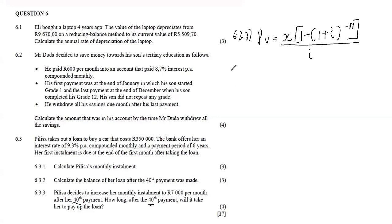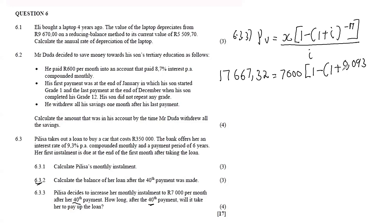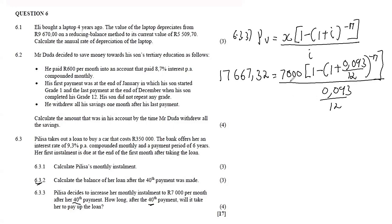The present value — the outstanding balance after the 48th payment — is R177 667.32, the value calculated in the previous question. The new installment x is now R7 000. The interest rate remains 0.093 over 12. We need to find n. The first step is to divide both sides by 7 000 to isolate the bracket expression.